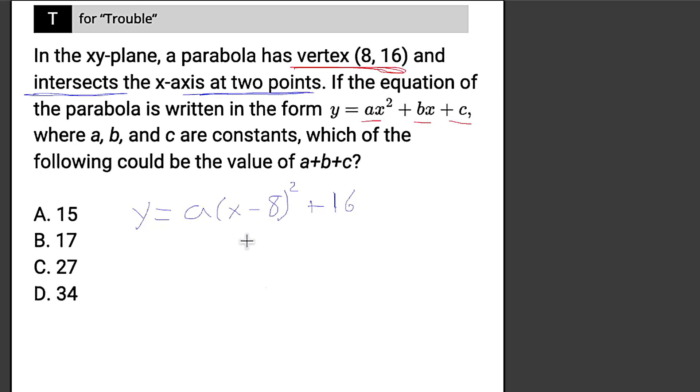So we can foil this part out first, and this is going to become x squared minus 16x plus 64. And then obviously we still have this plus 16 left over, but let's not worry about that for now because all this stuff in parentheses is still getting multiplied by A. So then this becomes ax squared minus 16ax plus 64a. And then now I'll add that 16 at the end, plus 16.